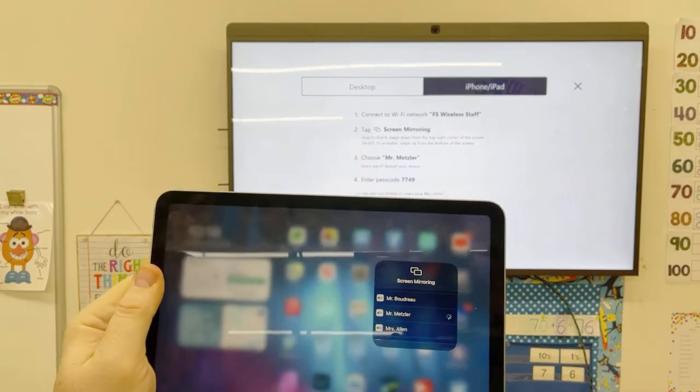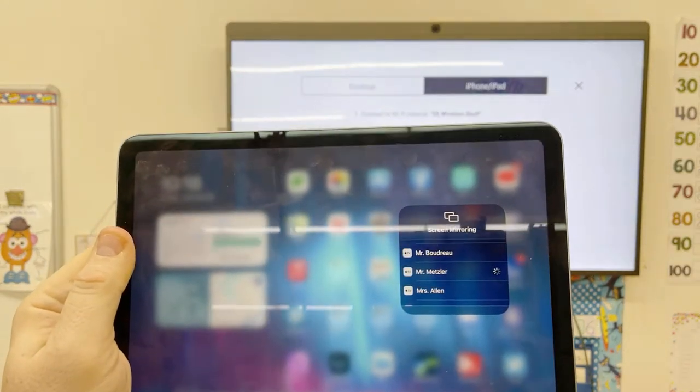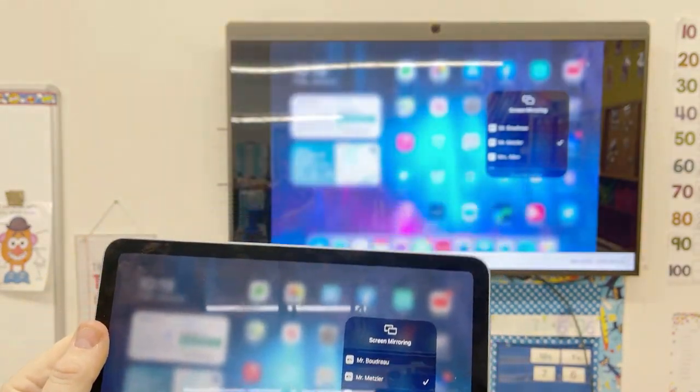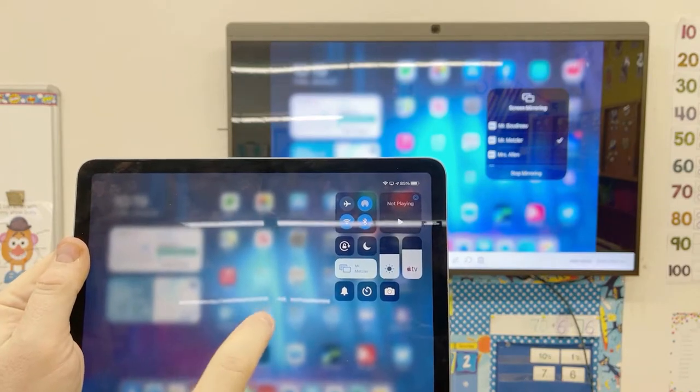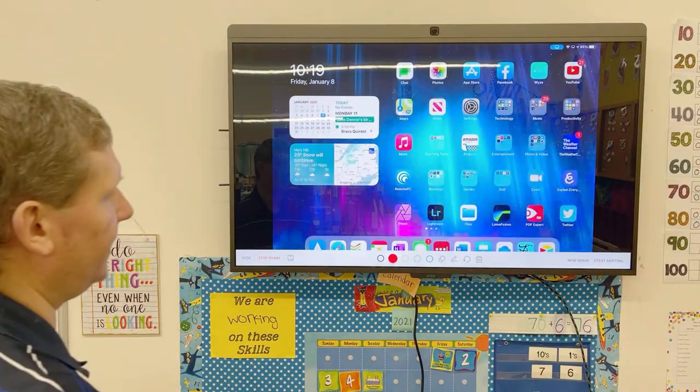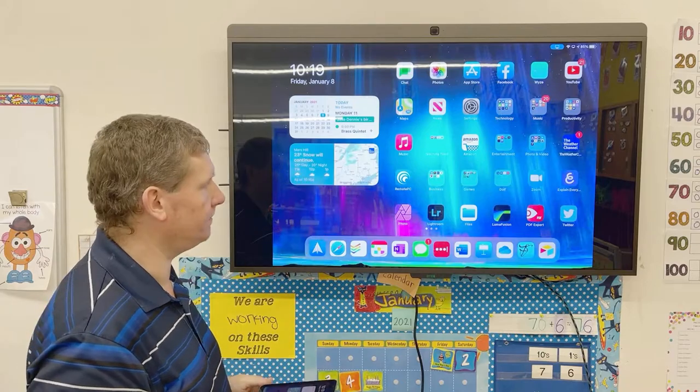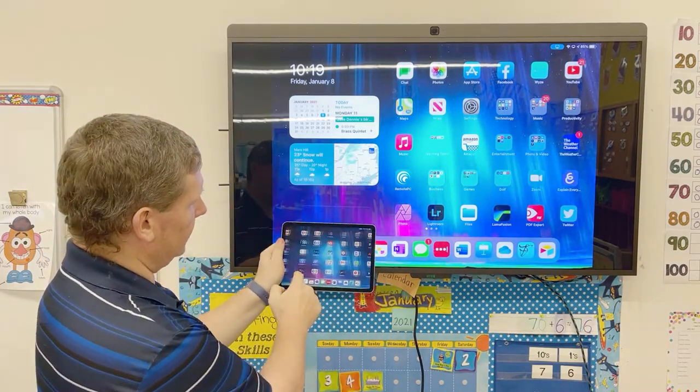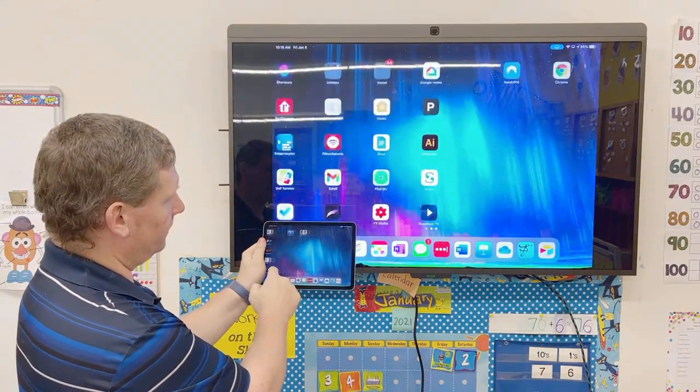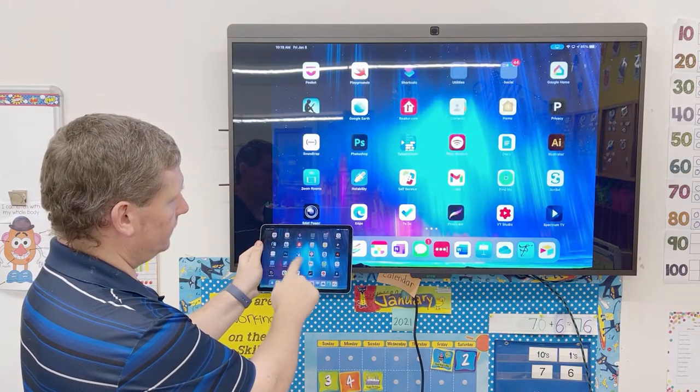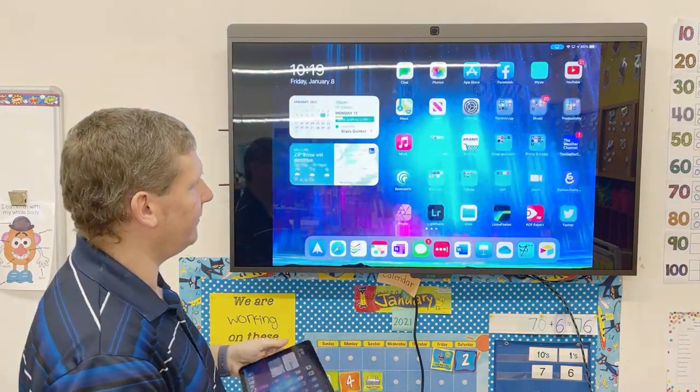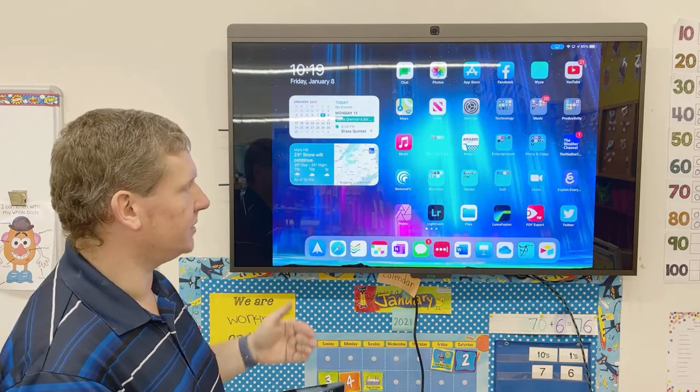Now I'm going to tap off of it and tap off of it again to get rid of it. And you see my screen AirPlayed up here. As I scroll, it's going to scroll. Everybody in your room will see exactly what they're seeing on the screen.